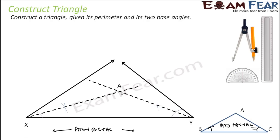The two bisectors will meet at a point, and this point is called point A. Now, this whole length XY is the perimeter. We need to find points B and C on this line such that AB equals BX and AC equals CY, giving us BC somewhere in between. To find these points, we draw the perpendicular bisector of AX and the perpendicular bisector of AY.